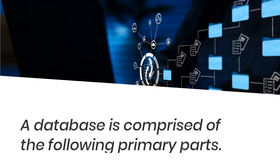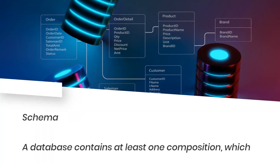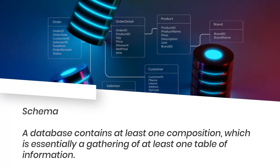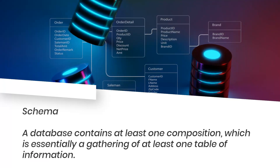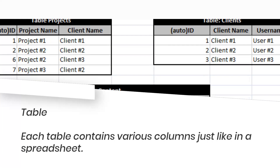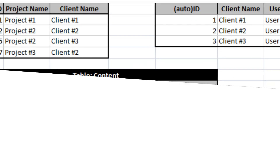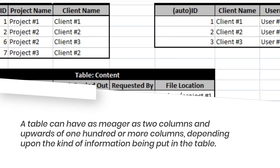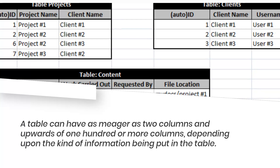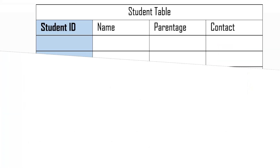Database components — a database is comprised of the following primary parts. Schema: a database contains at least one schema, which is essentially a gathering of at least one table of information. Table: each table contains various columns just like in a spreadsheet. A table can have as few as two columns and upwards of 100 or more columns, depending upon the kind of information being put in the table.